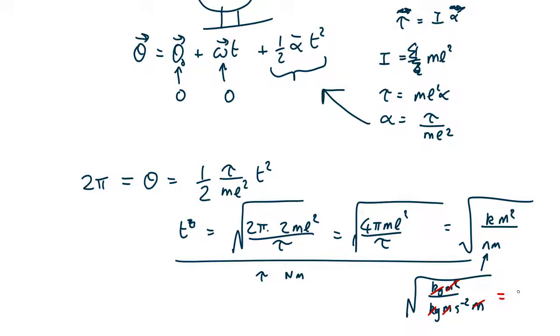So that comes out as s times squared, which comes out as s, which is indeed time. So that checks. We can also check functional form. If the torque is bigger it will take less time to rotate, which makes sense. If the blades are heavier it will take longer. If the blades are longer it will take longer. So all those things make sense.